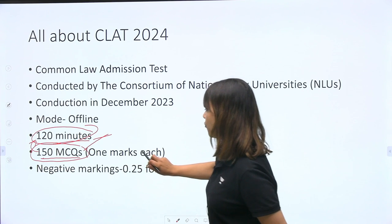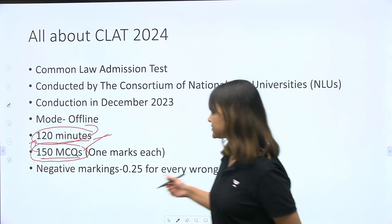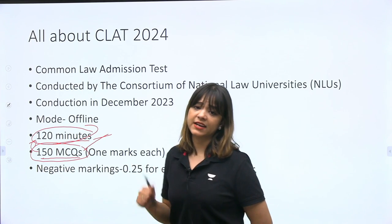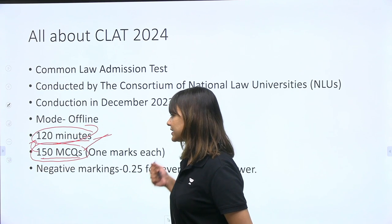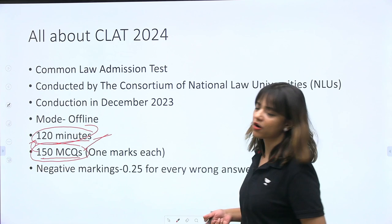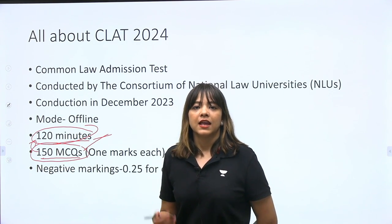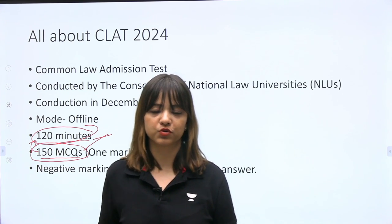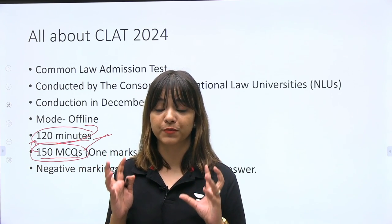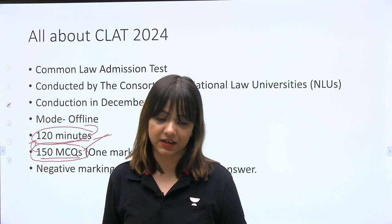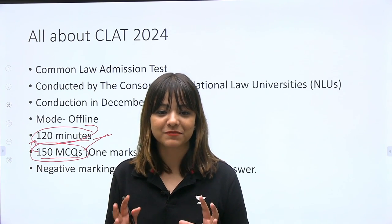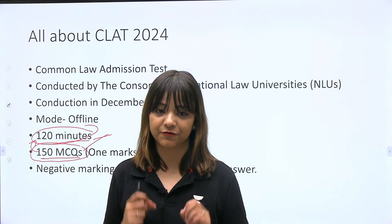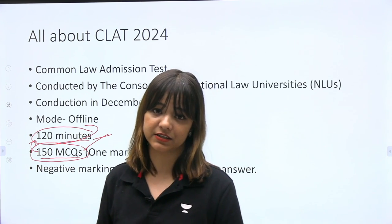Each MCQ carries one mark — you get one mark for every correct answer. Does CLAT have negative marking? Yes, CLAT has negative marking of 0.25 for every wrong answer. That means if you give four wrong answers, one full mark will be deducted. So you have to make sure you are attempting all 150 MCQs, and that all your answers are correct, because for every wrong answer 0.25 marks will be deducted from your score.